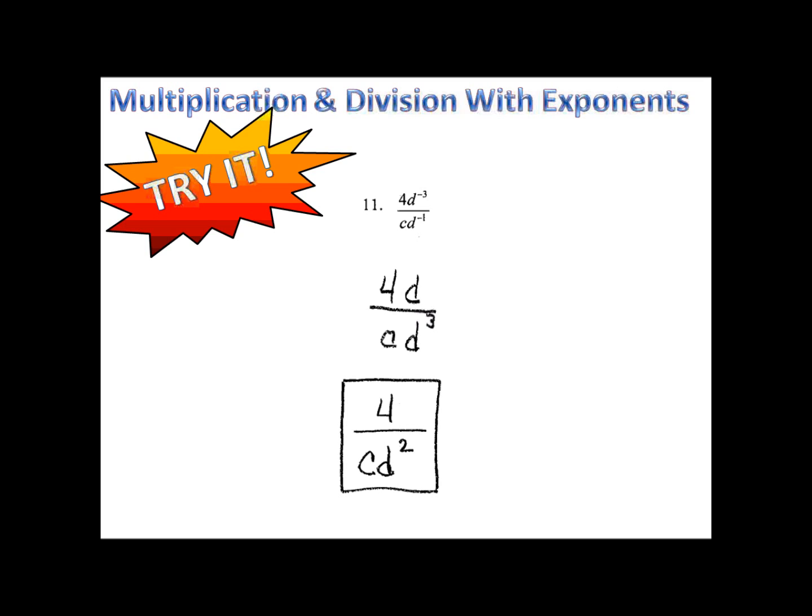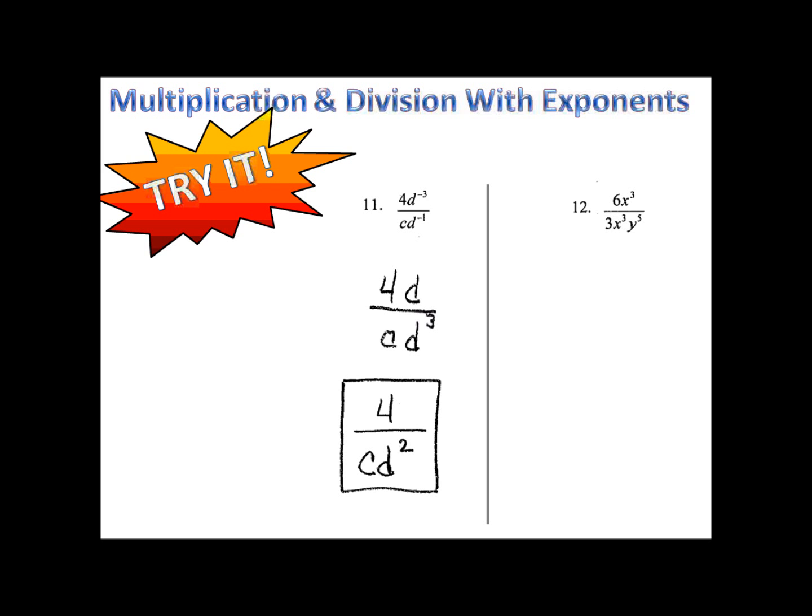How about number 12? Let's see how you do here. Here, we take 6 divided by 3 is 2. We'll take our x's, 3 minus 3, x to the 0, and we just have our y to the fifth down at the bottom. x to the 0 is 1, so we have 2 times 1, or simply 2, over y to the fifth.